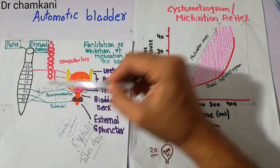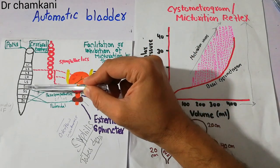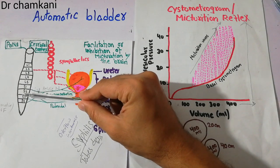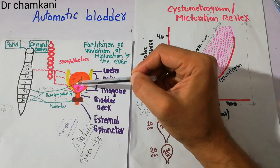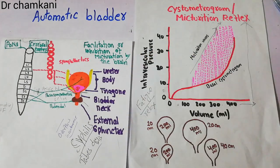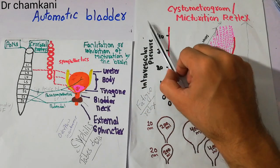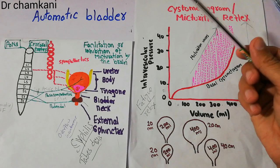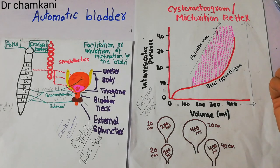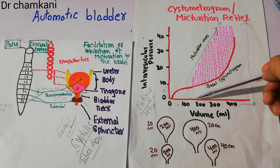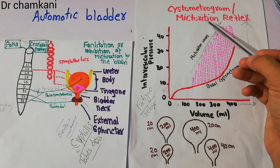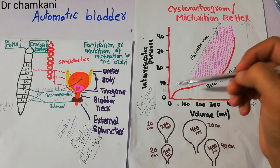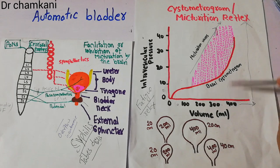The signals start from the stretch receptors and are carried to the sacral segment through the pelvic nerve. The sacral segment then sends motor signals to the urinary bladder, which starts contracting, and the micturition waves begin. If there is sufficient urine, urination will occur. If the volume is less, the micturition reflex will stop the contraction and the waves will disappear, starting again as the volume increases.